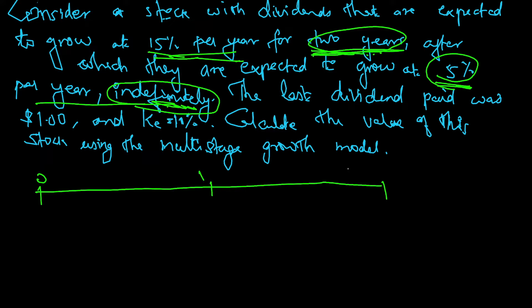So this is zero, one, two. First year, the recently paid dividend is $1, which is growing at the rate of 15%, so 1 plus 15% comes to $1.15. This is the cash flow.